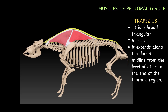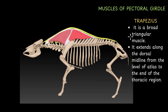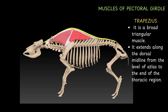First we should start with the trapezius muscle. Trapezius is a broad and triangular muscle. It extends along the dorsal midline — you can see, this is the dorsal midline — from the level of atlas to the end of the thoracic region.